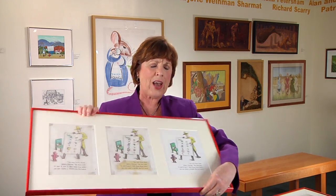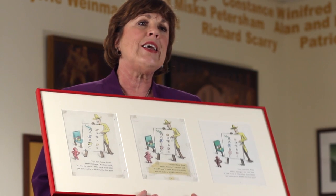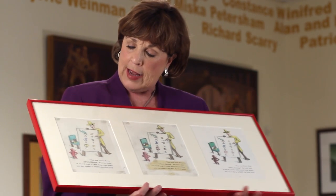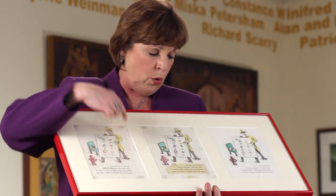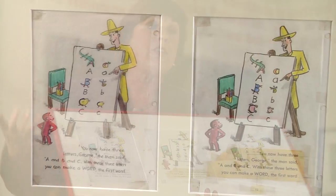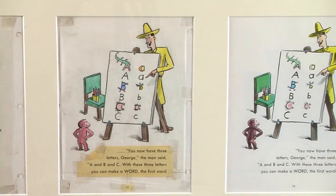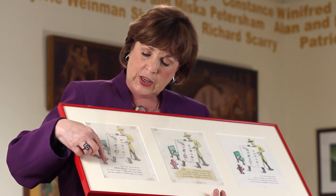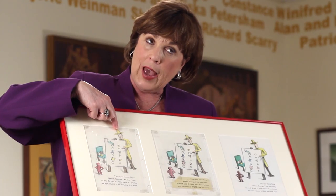Another thing I'd like to show you is just how H.A. Rey would experiment. We have here several little illustrations that he did for the book 'Curious George Learns the Alphabet.' You can see even notebook holes on the side, because he was just sketching this on notebook paper. He had actually written the text in his own hand. And of course, here's George, and here's his friend, the man with the yellow hat.